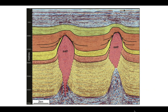Let's look at some geometries. We've already picked out some reflections in here, but you can see that the package of reflectors in the upper orange unit onlaps the yellow, which forms flaps along the walls of the salt body.